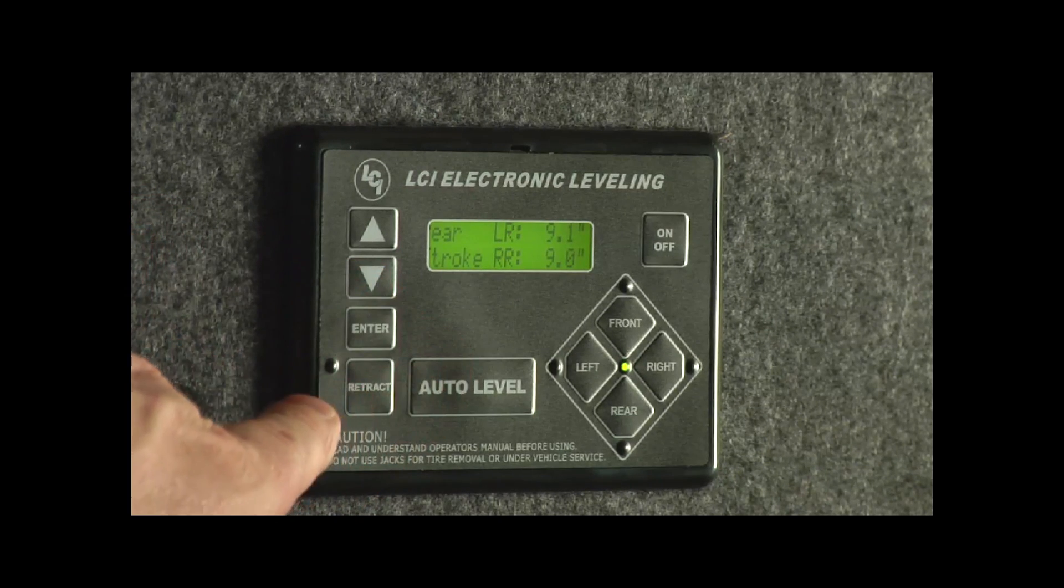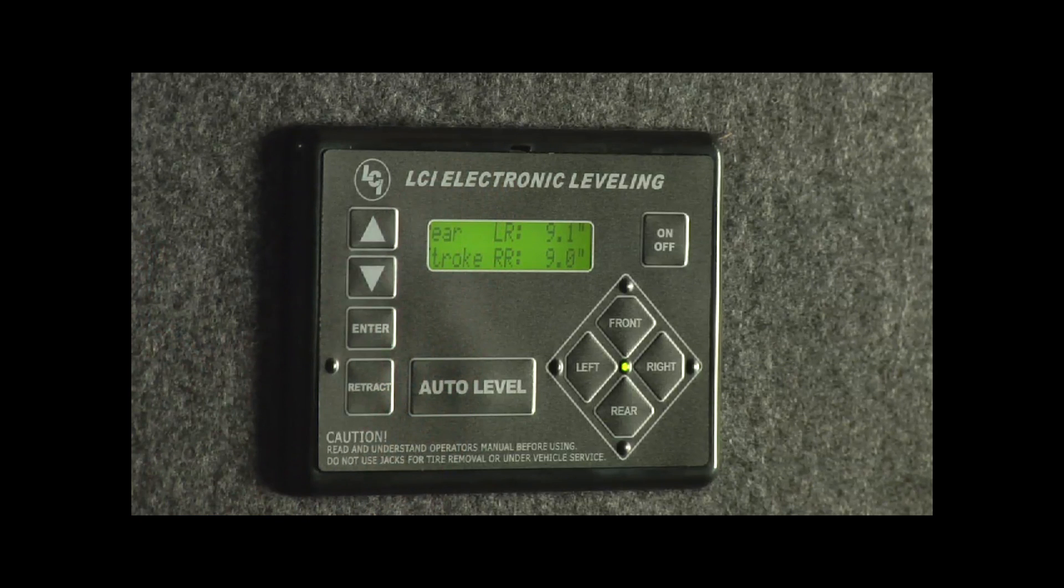Our next one is rear left and right. It's showing the extension of those jacks. The left rear is 9.1 and the right rear is 9.0. We're in a pretty level situation so that's why we're so close. If our campsite was off a little bit it would be seven inches on the left and nine inches on the right. That's fine. It's just telling you where the jacks are and how far they're extended.